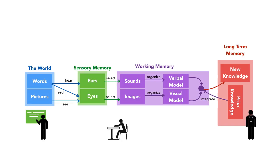We select which information we want to pay attention to and bring that into our working memory, where we can hold on to it a little bit longer. There, we make sense of it by organizing it into models — a verbal model or a visual model. Finally, we integrate those two models together along with our prior knowledge, and use that to encode new knowledge in the form of long-term memory.